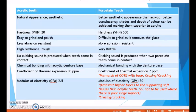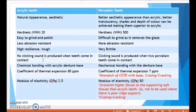Acrylic teeth have less abrasion resistance — they are softer and easier to grind — while porcelain teeth are more abrasion resistant. Acrylic teeth have high resilience and are tough, whereas porcelain teeth are very brittle. If dropped, porcelain teeth are more likely to chip and fracture because porcelain is very brittle, especially in thin sections. No clicking sound is produced when acrylic teeth contact each other, but a clicking sound is produced when two porcelain teeth come in contact.